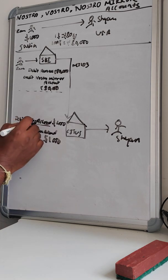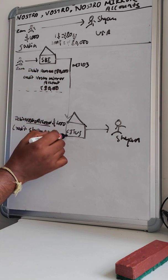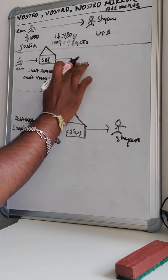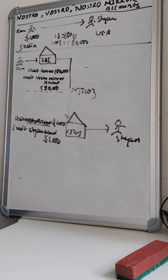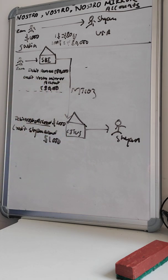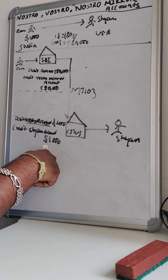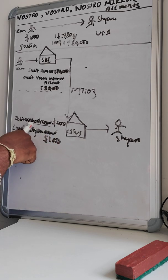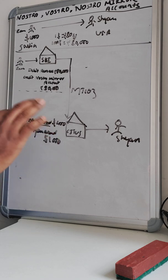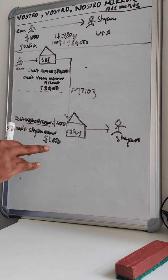This Nostro account belongs to SBI. SBI's account is already funded at Citibank US. On receiving the MT103 message, Citibank US gets instructions: SBI is telling Citibank US to credit its customer Sam with one thousand dollars, and to debit it from the Nostro account of SBI which is already held in Citibank US.